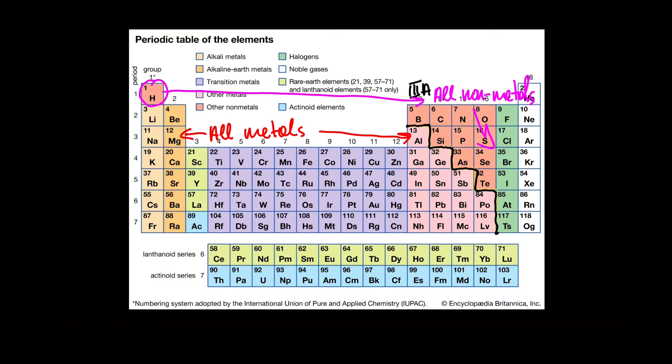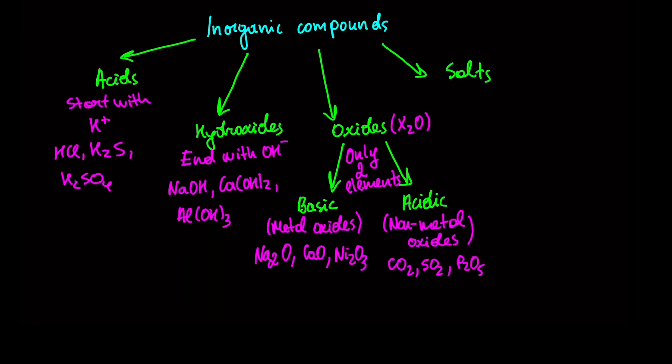Lastly, there are salts. The easiest way to discern which compound is salt and which is not is to ask yourself a question: Is this compound an acid, a hydroxide, or an oxide? If the answer is no, then we are dealing with a salt.